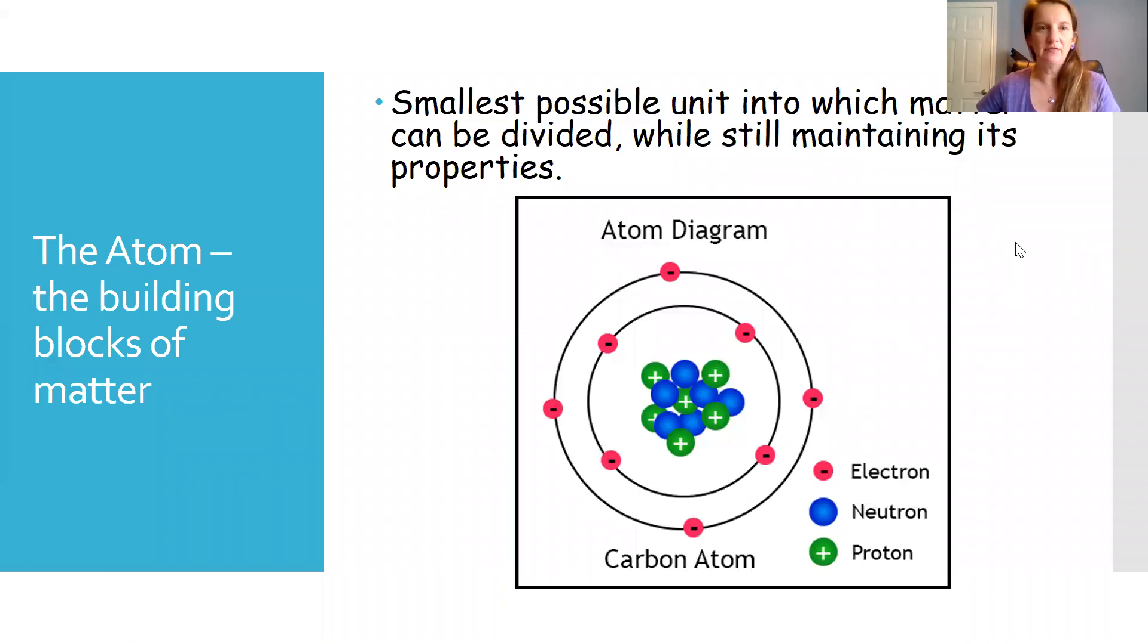So first off, just to define the atom. The atom is the smallest unit of matter that still retains the properties of that particular element. I know that we talked about in the last video with the history of the atom that atoms can be divisible, that there are smaller things than atoms such as those subatomic particles, but those subatomic particles don't retain any of the identity of the atom itself.